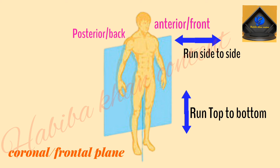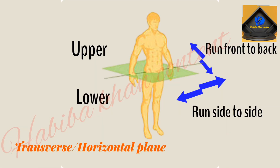Coronal or frontal planes run side to side and top to bottom. These planes divide the body into anterior and posterior sections. Transverse planes run from side to side and front to back, dividing the body into upper and lower sections. These planes are sometimes called horizontal planes.